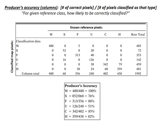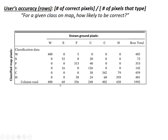Let's start with producer's accuracy — here we look down the columns. Let's take sand as an example. Of the 68 pixels we know were on the ground, 52 of them were correctly categorized, so our producer's accuracy is 76%. And you can see for water it was 100% — pretty good.